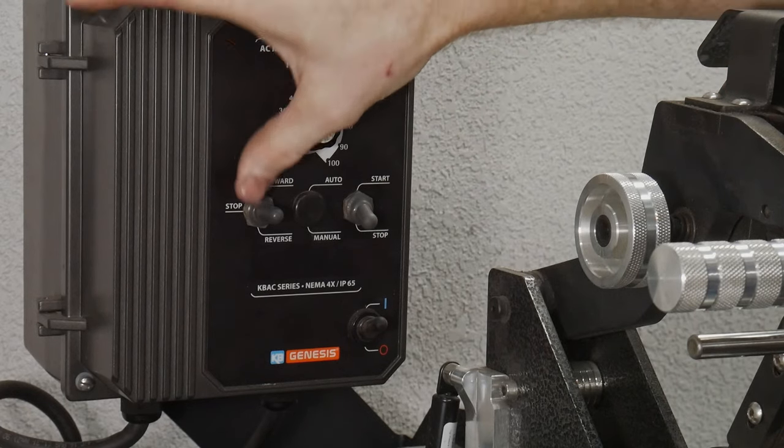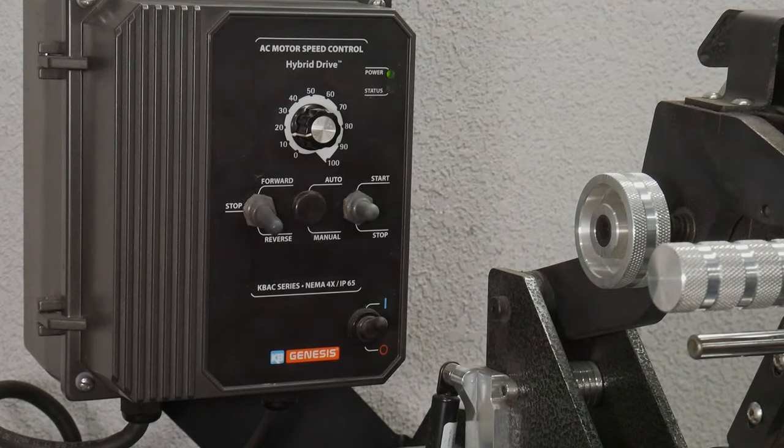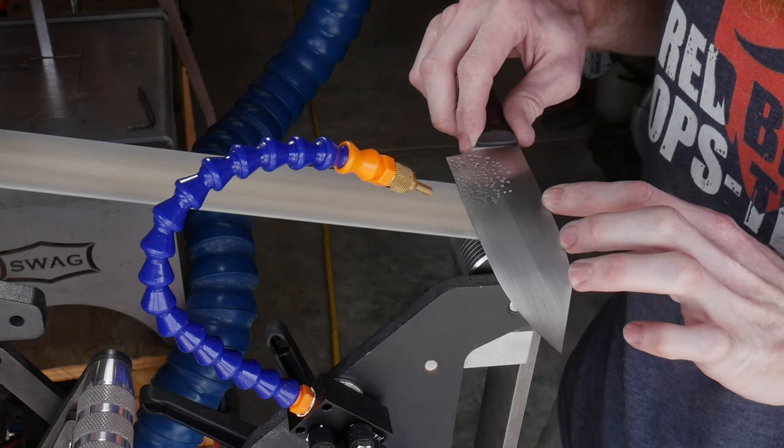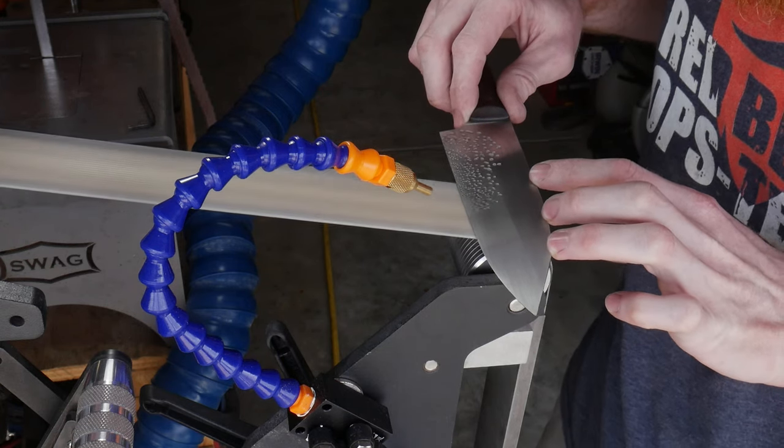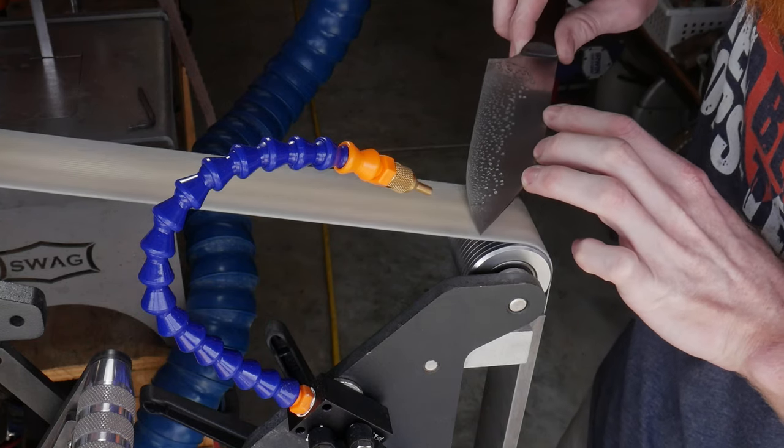However, I imagine you can run the grinder normally with the edge pointing towards you. I've seen many makers sharpen their blades in this manner with success. Now this is where some skill and practice will come into play. Turn your machine on, start the mister, then contact the belt with your edge.